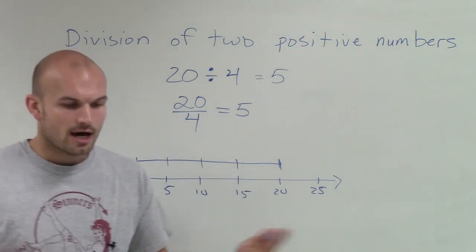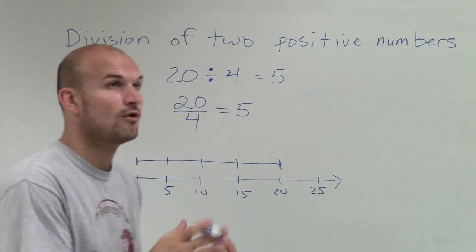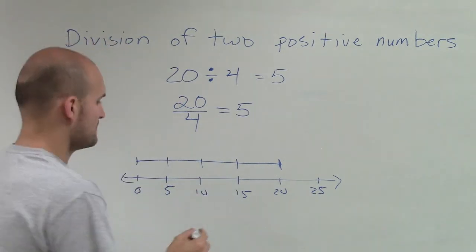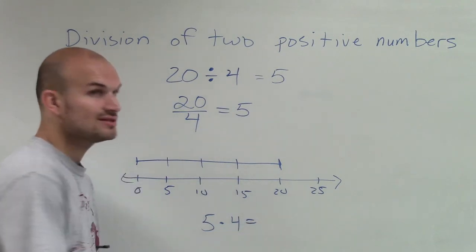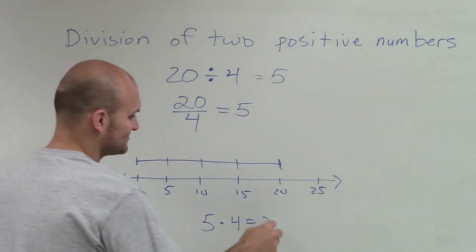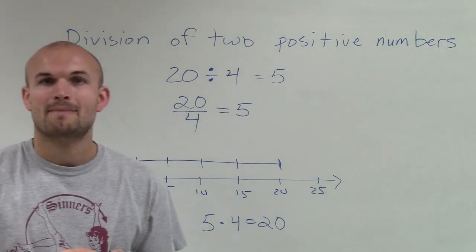And then again, I always like to check your work to say, all right, 4 goes into 20 how many times? 5. So that means 5 times 4 equals 20. And there you go. That's how we divide two positive numbers.